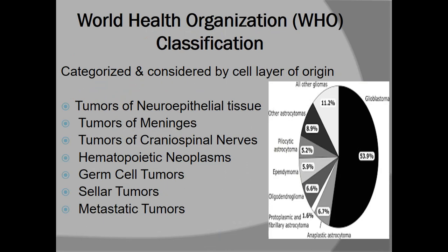Now coming to brain tumors. The WHO divides brain tumors into different classifications on the basis of origin. Tumors arising from neural tissues are called tumors of the neuroepithelial tissues. Similarly, tumors arising from the meninges are called tumors of the meninges. We can also have cranial and spinal nerve tumors, hematopoietic neoplasms, germ cell tumors, sellar tumors, and metastatic tumors.